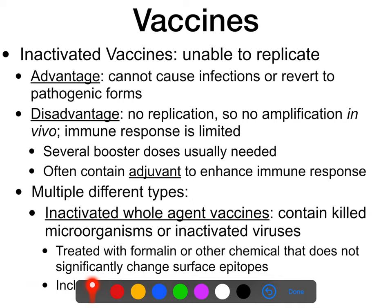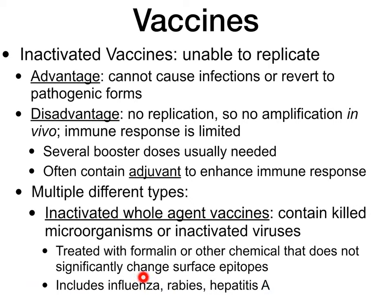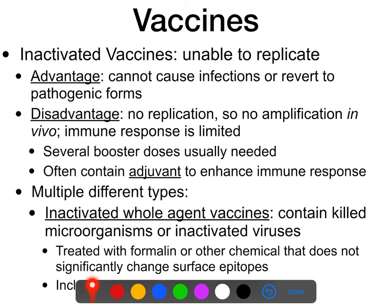There are advantages and disadvantages to both types of vaccines. Inactivated whole agent vaccines include influenza, rabies, and hepatitis A. We actually have influenza vaccines of both sorts — if you get a flu shot, that's typically an inactivated vaccine, but if you get the nasal spray inhaled vaccine, that's usually live attenuated.